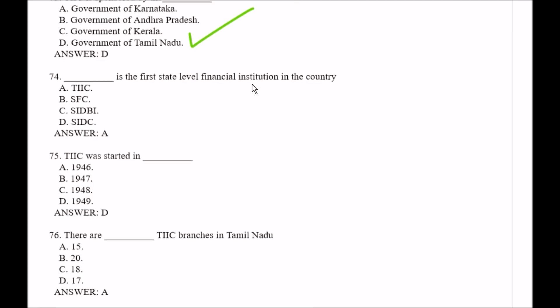Question number 74: Blank space is the first state-level financial institution in this country. Options: Option A, TIIC; Option B, SFC; Option C, SIDBI; Option D, SIDC. The right answer is Option A, that is TIIC.